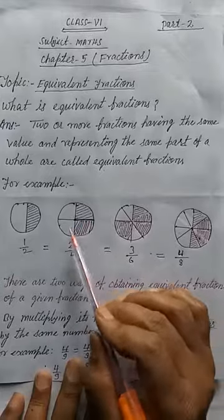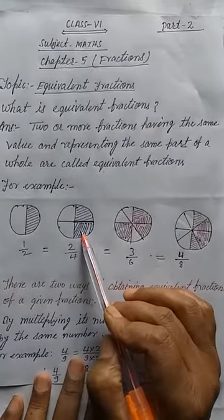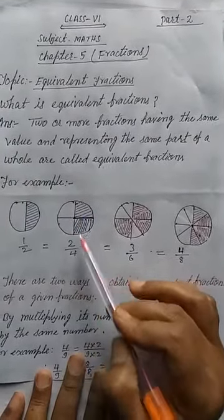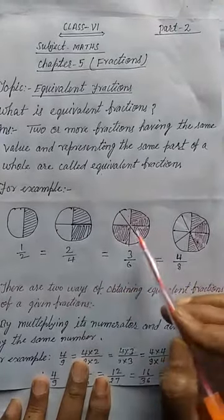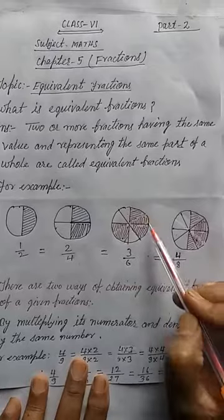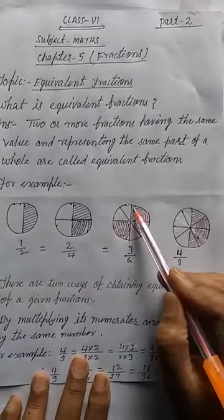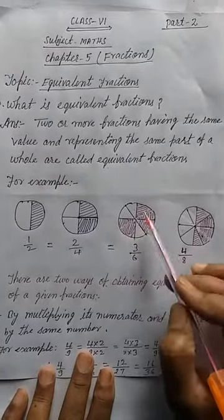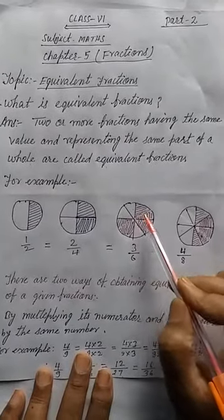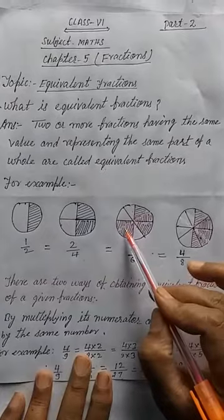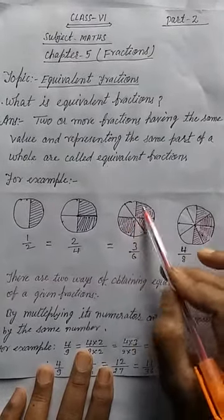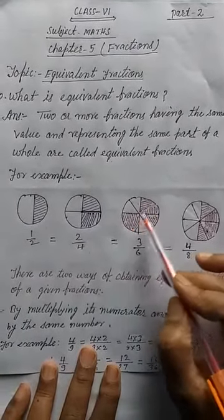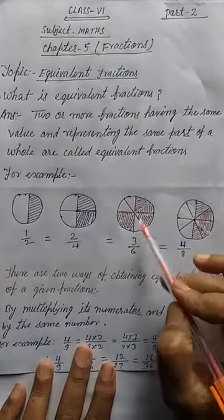Similarly, here there are 4 parts — 1, 2, 3, 4 — but two parts are shaded, and 2/4 parts are not shaded. So we can write 2/4. Similarly, here there are 6 parts. You can count: 1, 2, 3, 4, 5, 6. Three parts are shaded and 3 parts are unshaded. So we can say 3/6 is shaded and 3/6 is not shaded. And if we add 3/6 plus 3/6, you will also get a whole.